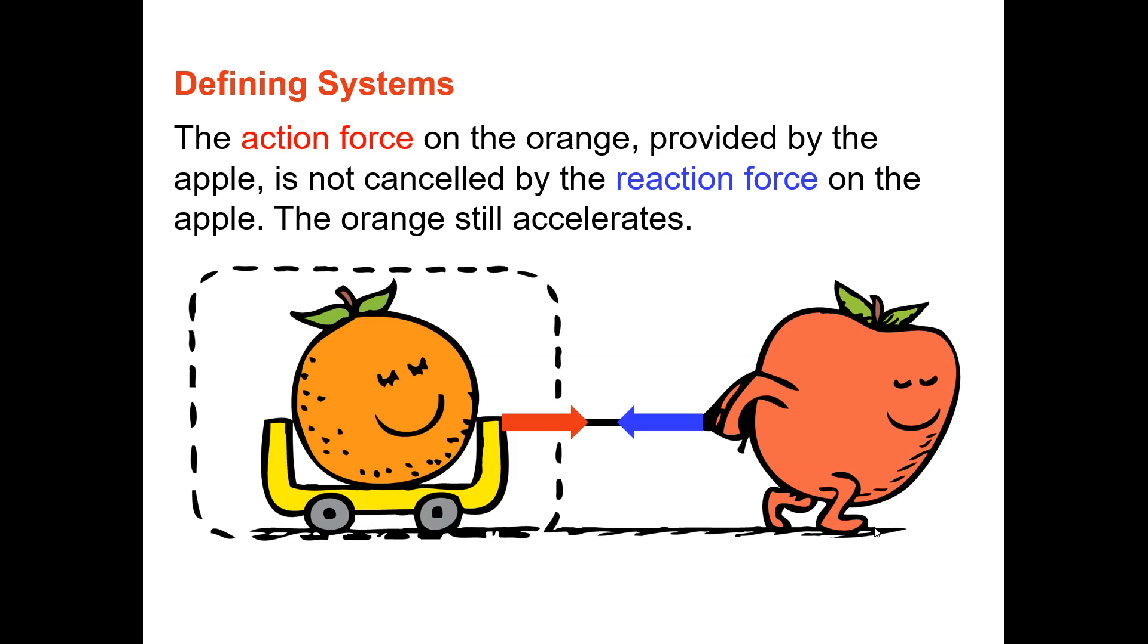That's your action-reaction pair forces. So if those two forces are equal but oppositely directed along the same rope, why does the orange move? Well, from the perspective of the system of the orange in the cart, do you see that the reaction on the blue arrow on the apple is outside the system? If we outline the system with those dotted lines, then there's only one force acting on the system, the red arrow. And so the system will respond to the red vector, which is the tug. So the orange will move toward the right of the screen.